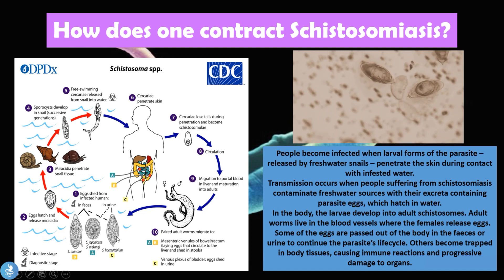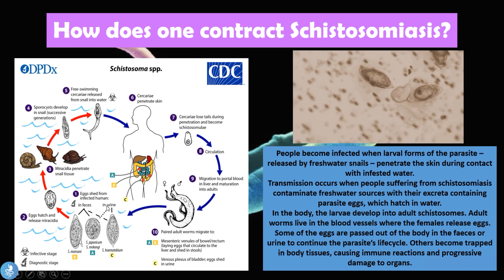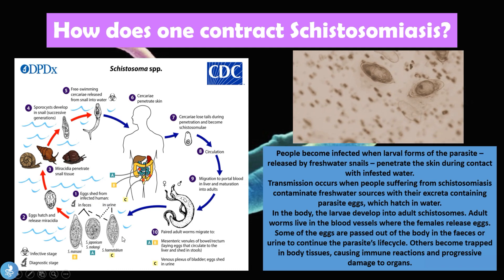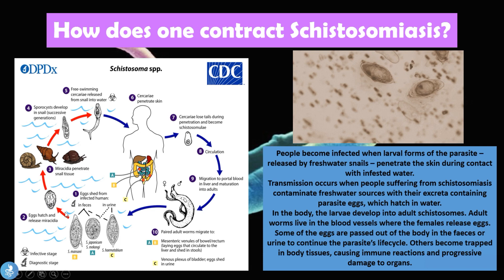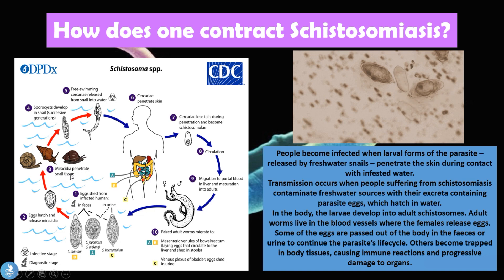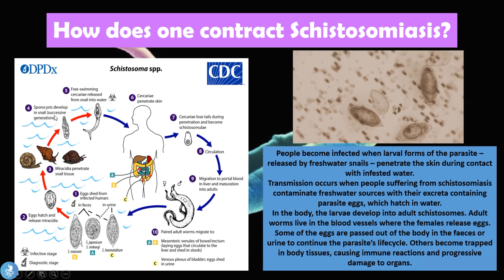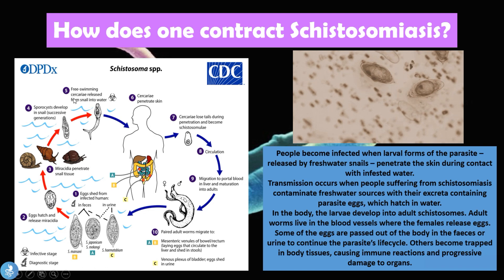Looking at the image on the left side of the screen, we can see how one actually contracts the disease. First, eggs are shed from the infected human in the feces — from all three species: S. mansoni, S. japonicum, and S. hematobium. The eggs hatch and release miracidia, a term meaning free-swimming larvae. Once the miracidia reach snails, they penetrate the snail tissues, where sporocysts develop through successive generations. Then free-swimming cercariae are released from the snail into the water. These cercariae penetrate the skin of the human host, losing their tails during penetration and becoming schistosomulae.